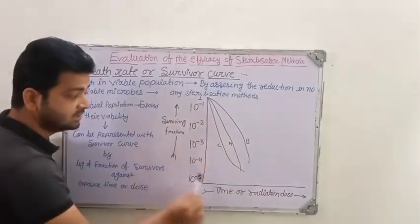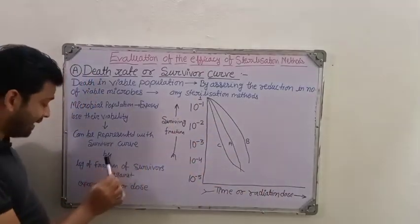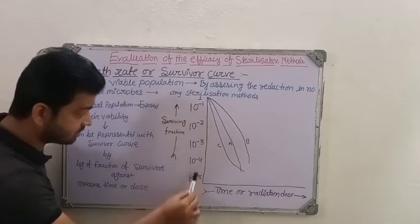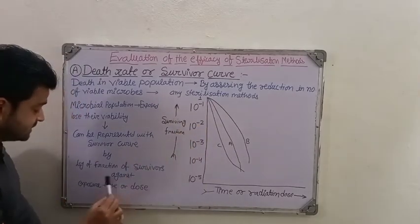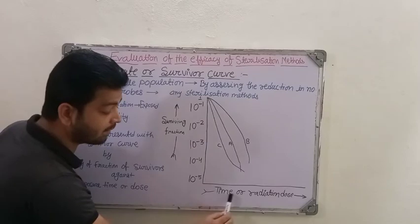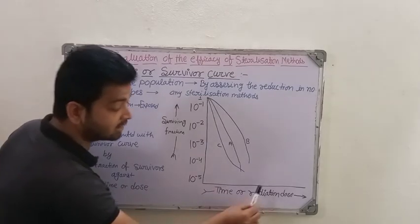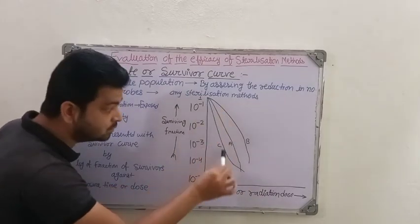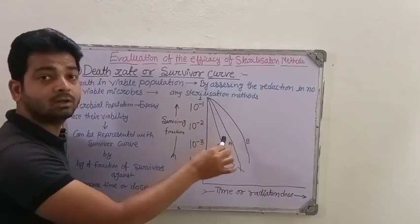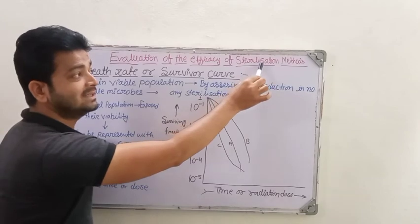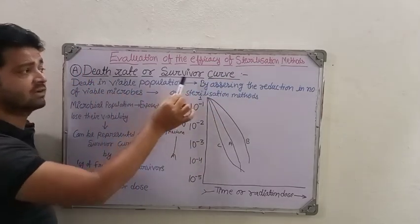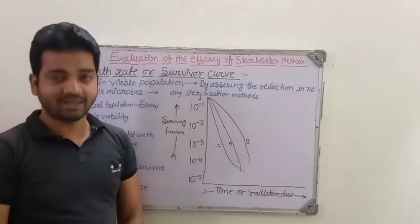This can be represented with the survival curve by plotting the log of fraction of survival against exposure time or dose. How much time is it taking? At what dose does it reduce the number of living cells on the particular object? By the particular sterilization method - that is called death rate or survival curve. Thank you, students.